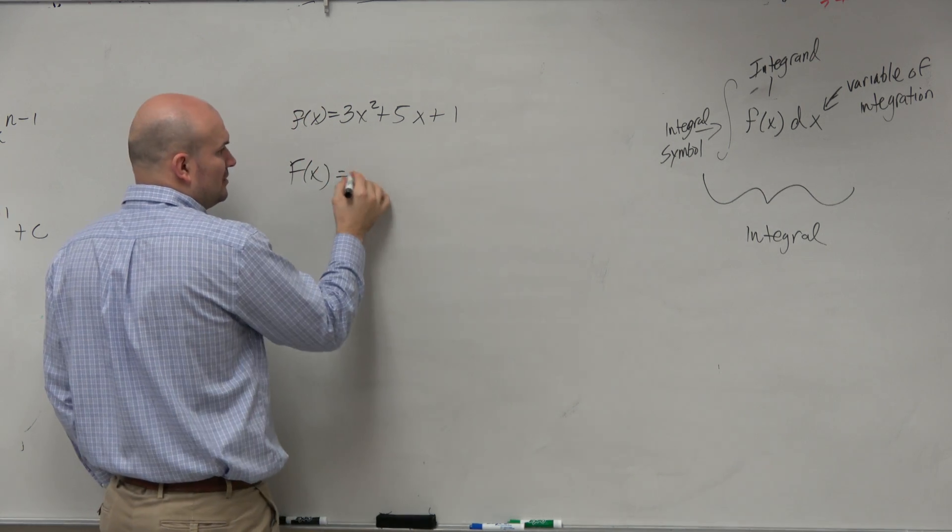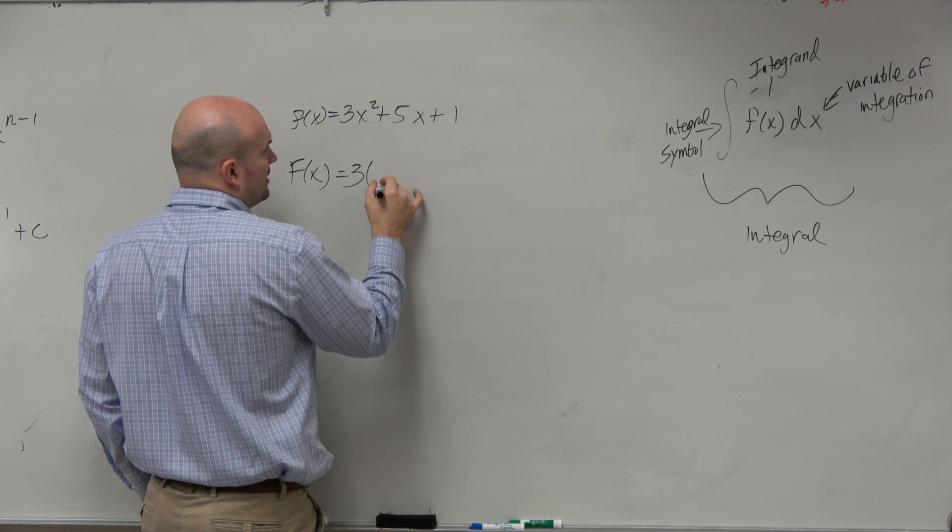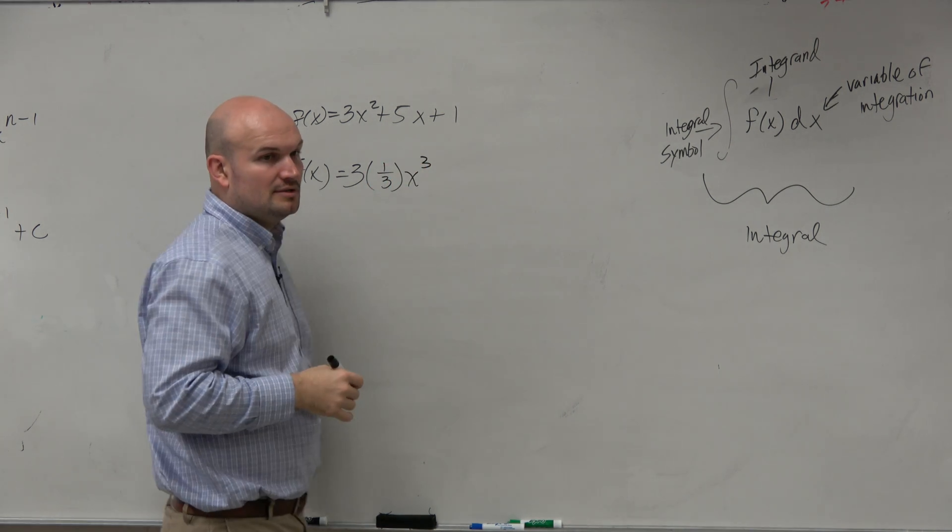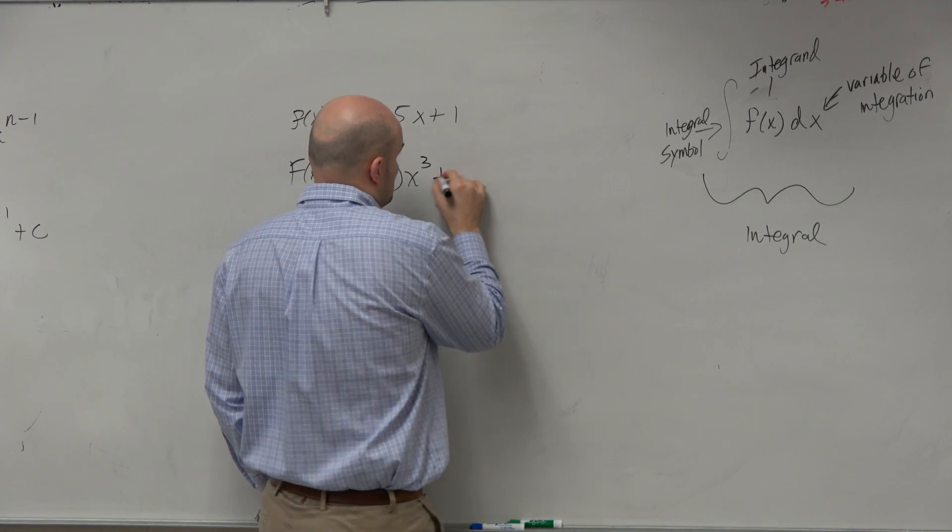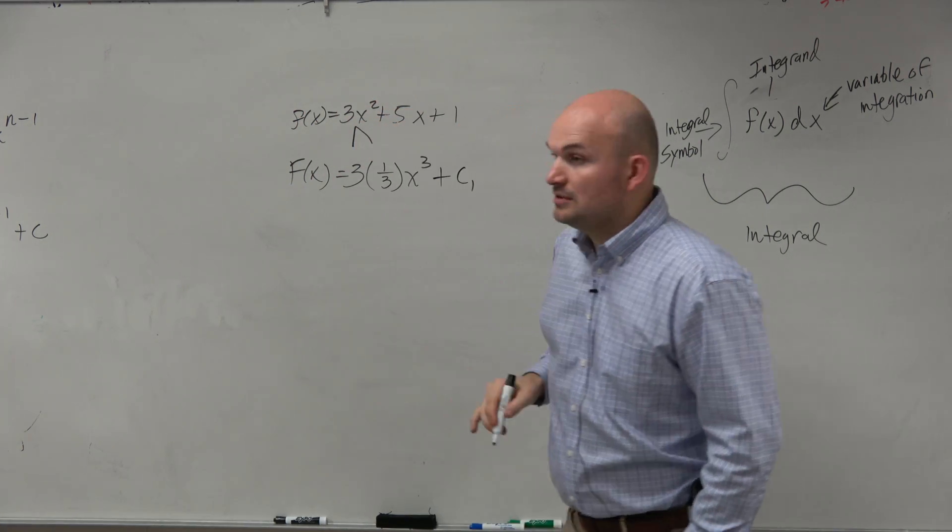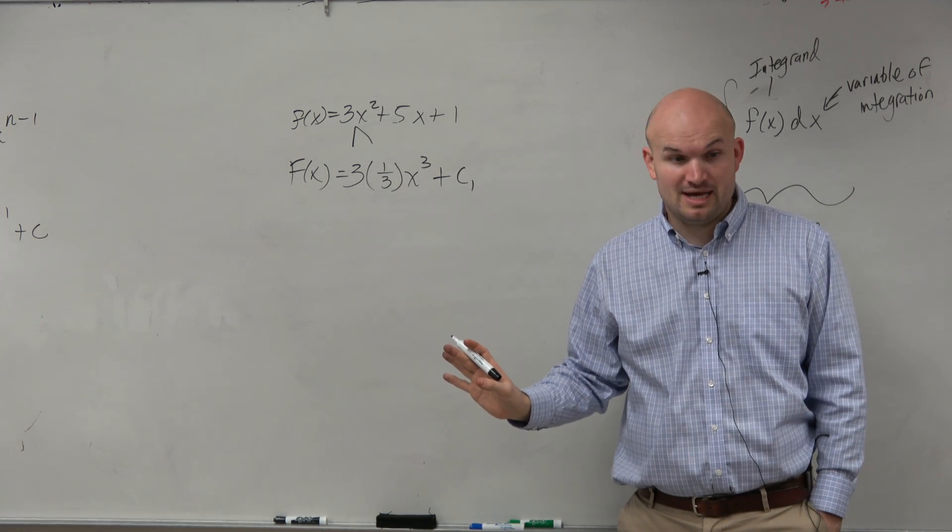So if we go ahead and use the power rule, I could kind of quickly do the first one as 3 times, let's see, 1 over 3 times x to the third. And then plus, let's call that c1. If I was just going to do this, would you guys agree with me on that? Does that look good? Does everybody got?